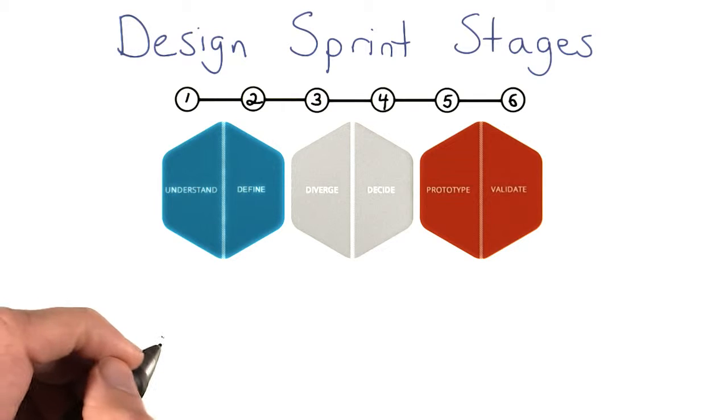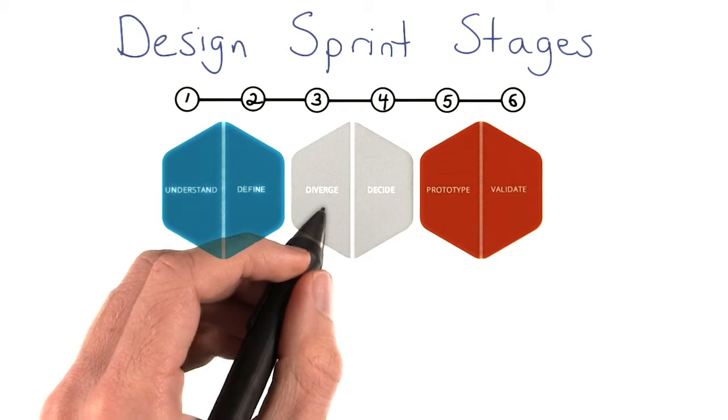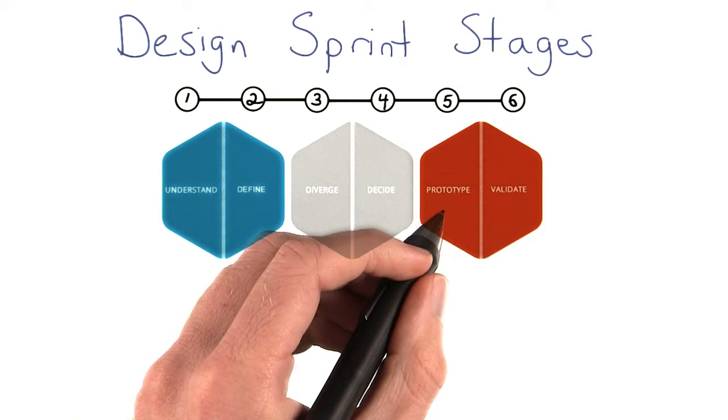So there you have it, the six stages of a design sprint: understand, define, diverge, decide, prototype, and validate.